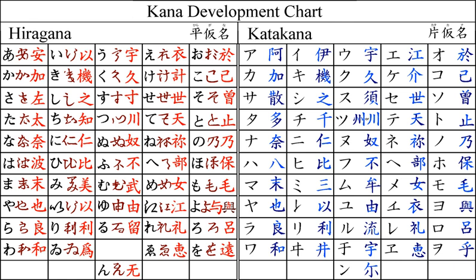Di and du are often transcribed into English as ji and zu instead, respectively, according to contemporary pronunciation. Usually, va, vi, vu, ve, vo are represented respectively by ba, bi, bu, be, and bo, for example in loanwords such as baiorin (violin), but less usually the distinction can be preserved by using vua, vui, vu, vue, and vo. Note that vu did not have an encoded hiragana form until JIS X 0213.